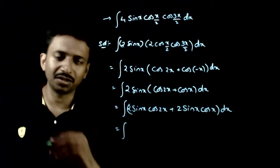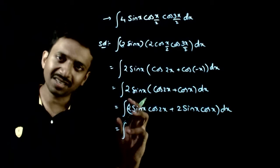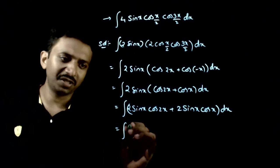That is equal to integration of 2 sin a cos b, which can be written as sin of a plus b plus sin of a minus b.